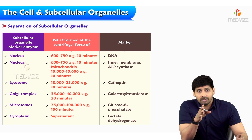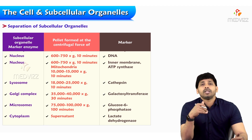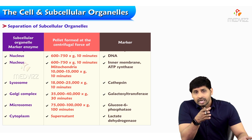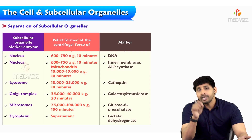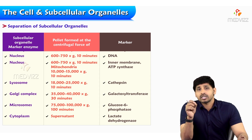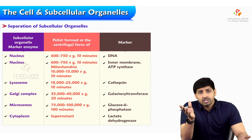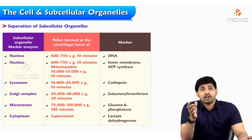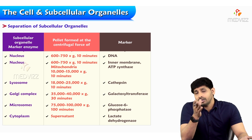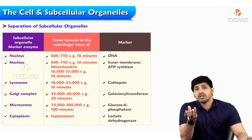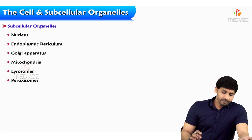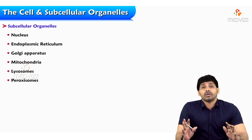For the nucleus, you apply 600 to 750 rotations for 10 minutes, and the marker is DNA — the main component present in the nucleus. For lysosomes, the marker is cathepsin. By identifying a particular marker, you can confirm which subcellular organelle has been isolated. For mitochondria, the enzymes present include Krebs cycle enzymes like alpha-ketoglutarate dehydrogenase or succinate dehydrogenase. To isolate the cytoplasm, glycolysis takes place there, so by identifying lactate dehydrogenase you can confirm the isolated organelle is cytoplasm.